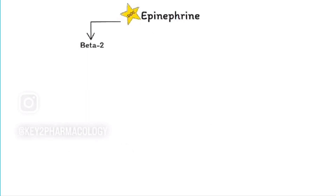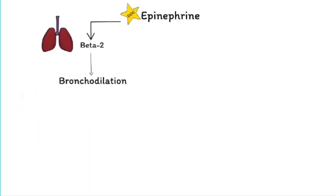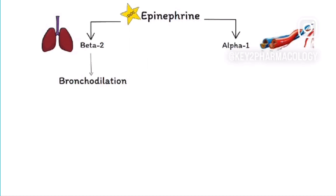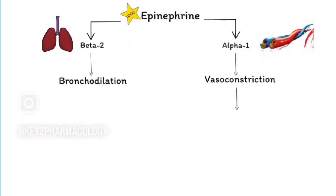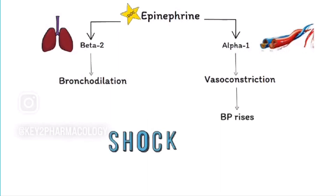Epinephrine acts on beta-2 receptors in the lungs, where it causes bronchodilation, relieving the shortness of breath. It also acts on alpha-1 receptors present in the blood vessels, causing vasoconstriction, which raises blood pressure and reverses shock.